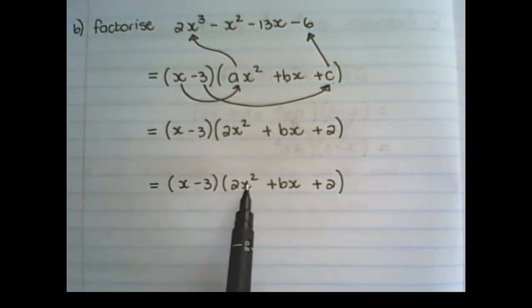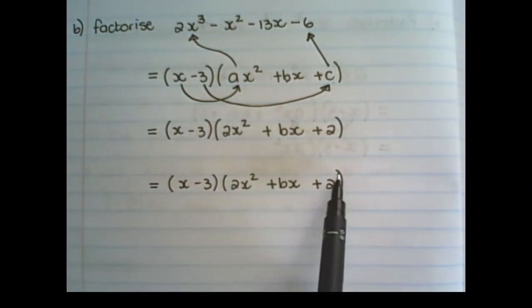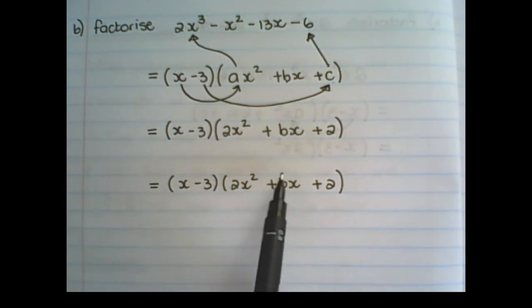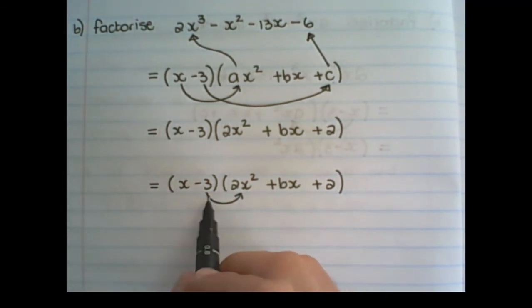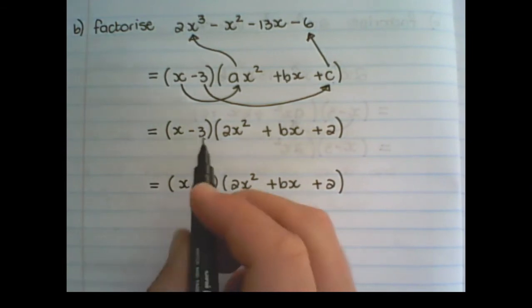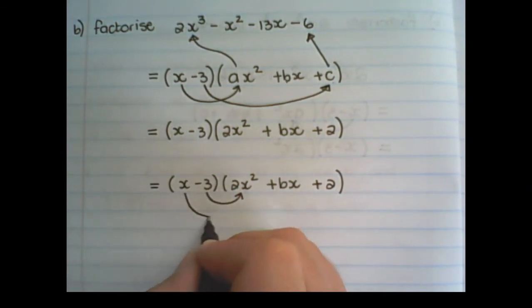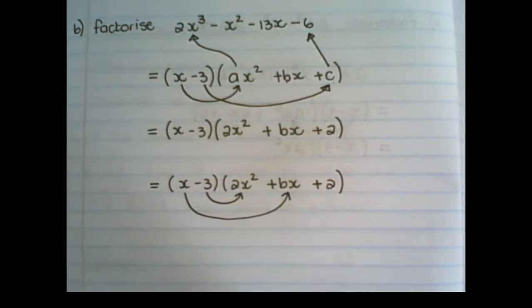And now that we have solved a and c, we can find bx. So in order to find b, I am going to create x squares. So I take negative 3 times 2x squared and x times bx. And I will create a new equation.